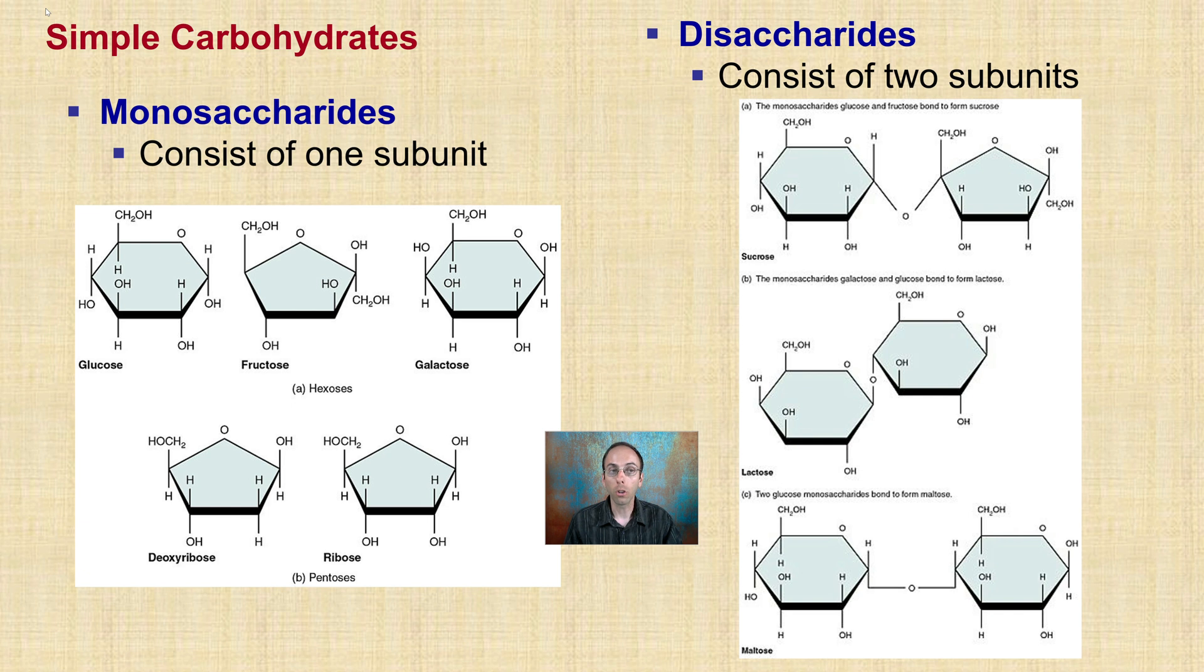Mono meaning one, one sugar, saccharides meaning sugar, so one sugar. It means that they consist of one subunit. You may have heard of glucose or fructose or galactose. These are all monosaccharides.